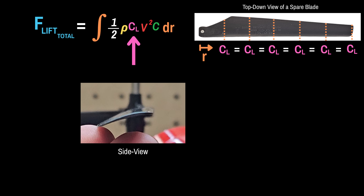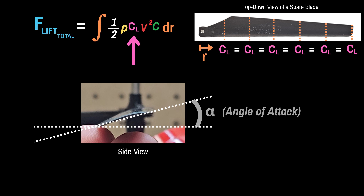I could normally look up a value for this shape and orientation, but since it appears to be a pretty thin airfoil with a relatively small angle of attack of 12 degrees, I'll approximate the lift coefficient using a common approximation: 2π·alpha, where alpha is the angle of attack. Converting 12 degrees to radians and plugging it in, I get that the lift coefficient is about 1.3.